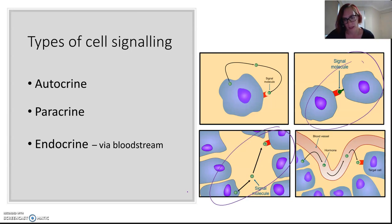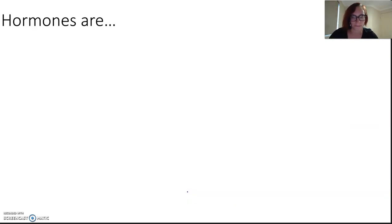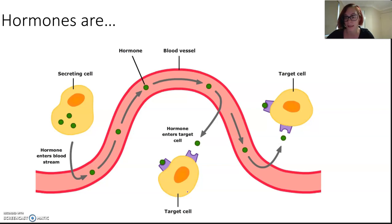Endocrine pathways are our main focus today, and they operate via the bloodstream. Signals called hormones are released via endocrine glands and travel via the blood system to certain target cells and tissues. Hormones are chemical messengers that act as signaling molecules — produced in tiny amounts but with really long-lasting effects on target cells. A specific hormone can only act on target cells that have that hormone's specific receptor protein on the cell membrane.